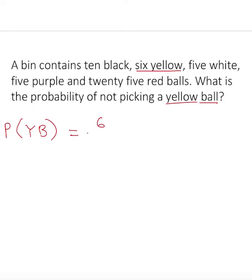So six out of the total means you have ten plus six plus five plus five plus twenty-five. So that will give you six out of fifty-one.